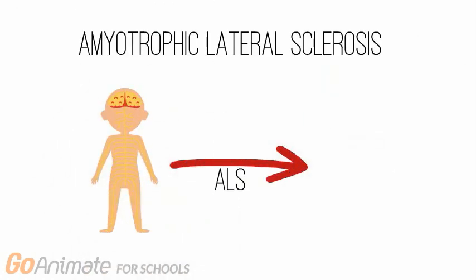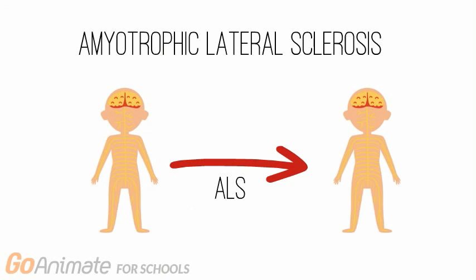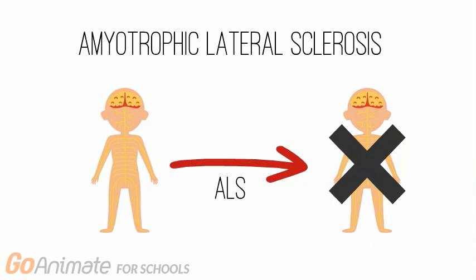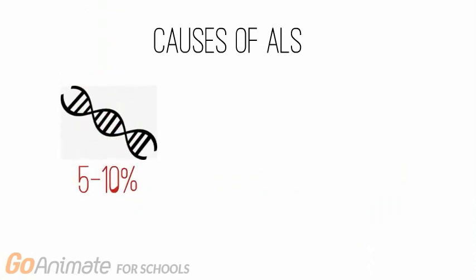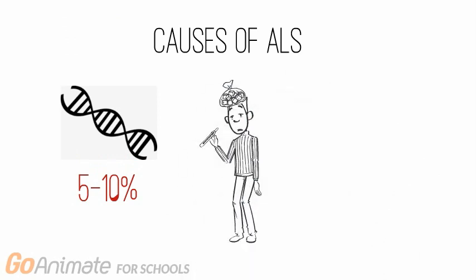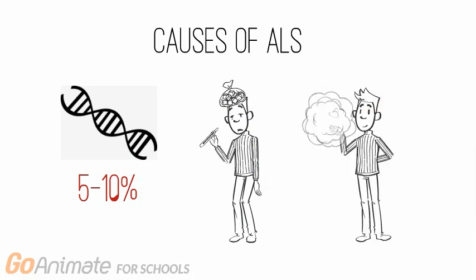Amyotrophic lateral sclerosis, also known as ALS and Lou Gehrig's disease, is a neurodegenerative disorder. Like other neurodegenerative disorders, ALS leads to the destruction of the human nervous system and therefore a loss of function. Like ALS, neurodegenerative diseases can be caused by many factors. Of these factors are faulty genes, which tends to be the case for 5-10% of people. The cause could be developmental or due to the environment, including factors such as physical injuries, cancers, infections, and even smoking.